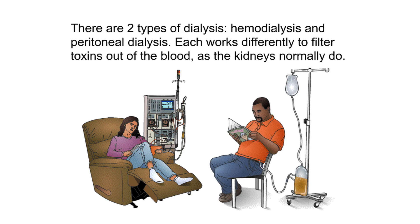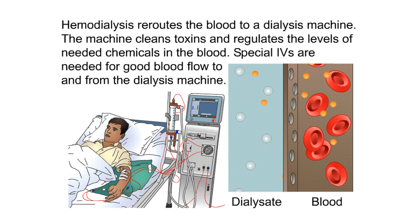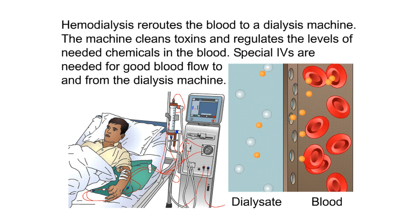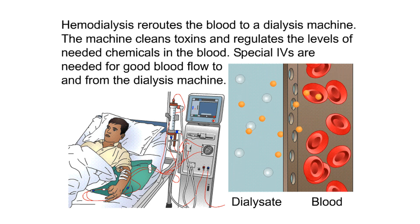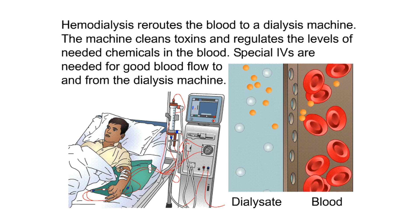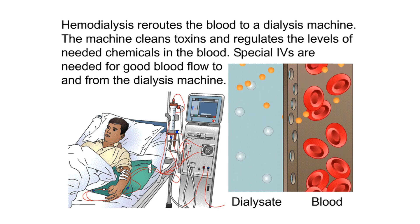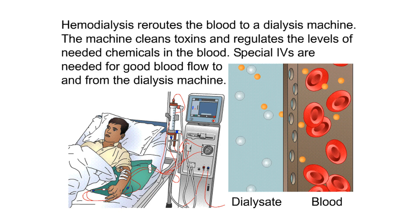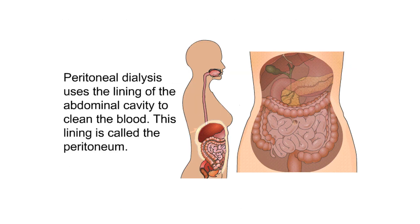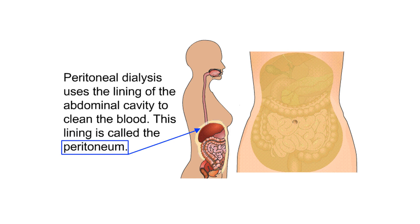Hemodialysis reroutes the blood to a dialysis machine. The machine cleans toxins and regulates the levels of needed chemicals in the blood. Special IVs are needed for good blood flow to and from the dialysis machine.